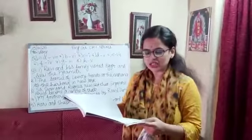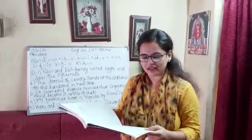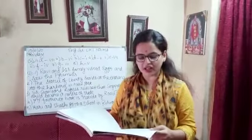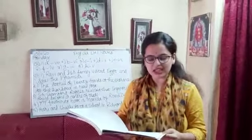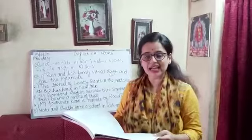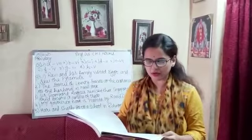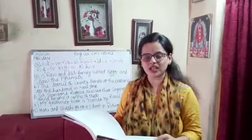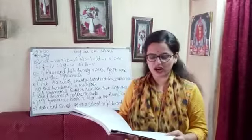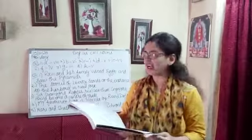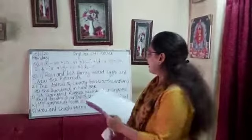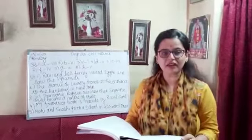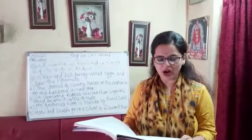Third sentence: Sir Stamford Raffles realized that Singapore could become a center of trade. The proper nouns are Sir Stamford Raffles and Singapore — circle them. The common nouns are center and trade — underline center and trade. Then rewrite the sentence.